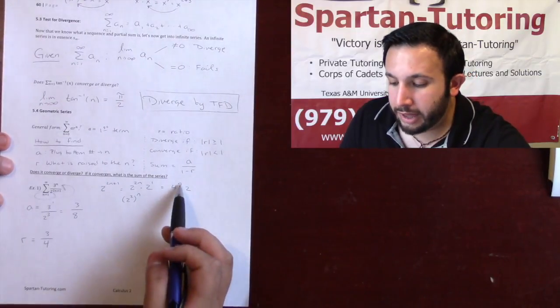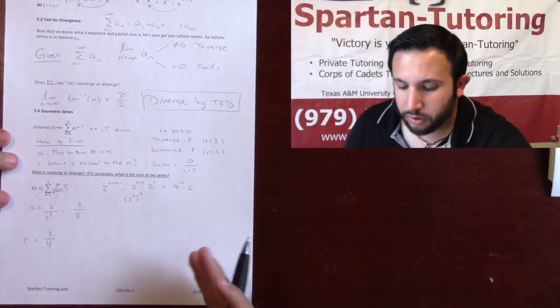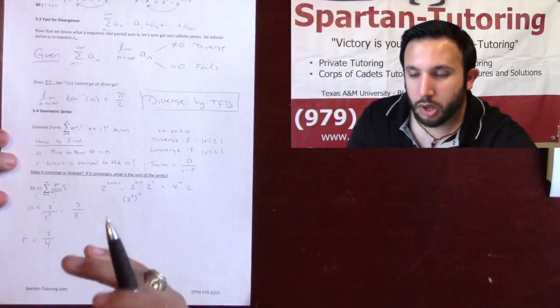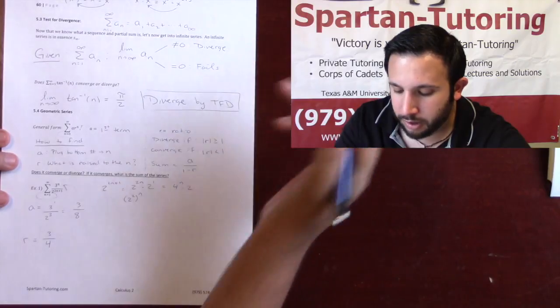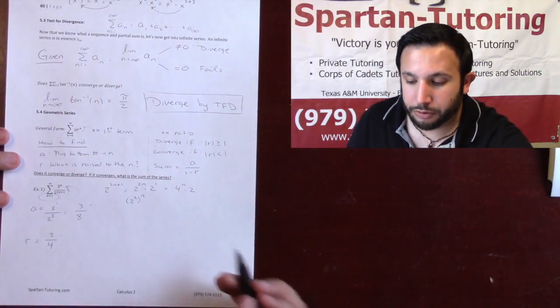Okay. On bottom, what I have being raised to the n is a 4. So all you need to do is look. For your r, it's nothing more or less than looking as to see which numbers are being raised to the n on top, which numbers are being raised to the n on bottom. Anyways, I got my a, cool, 3 eighths. I got my r, wonderful, 3 fourths.